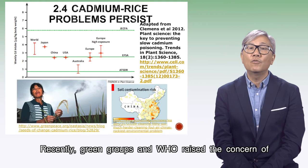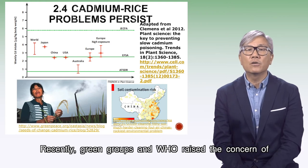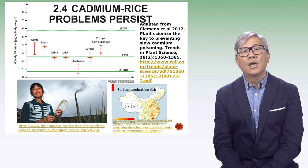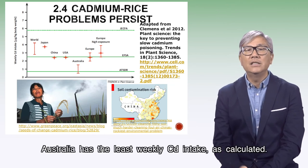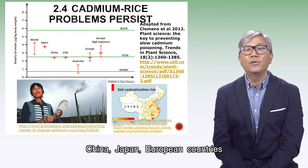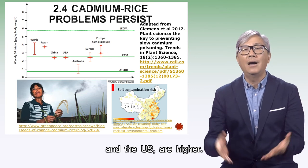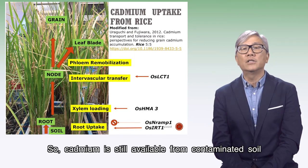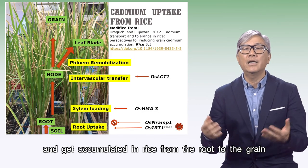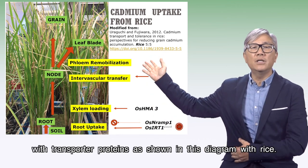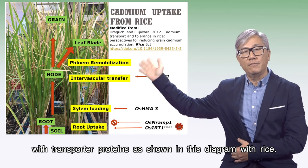Recently, green groups and the WHO raised concern about rice grown in China on contaminated soil. Australia has the least weekly cadmium intake as calculated. China, Japan, European countries, and the US are higher. Cadmium is still taken up from contaminated soil and accumulates in rice from the root to the grain via transporter proteins, as shown in this diagram.